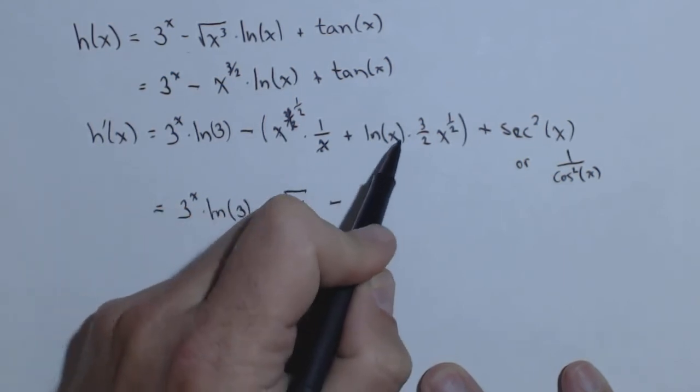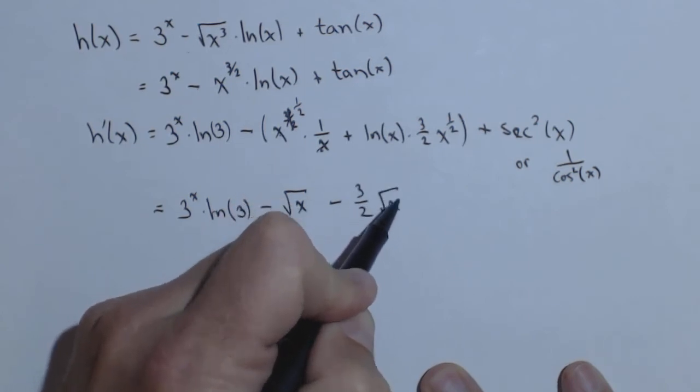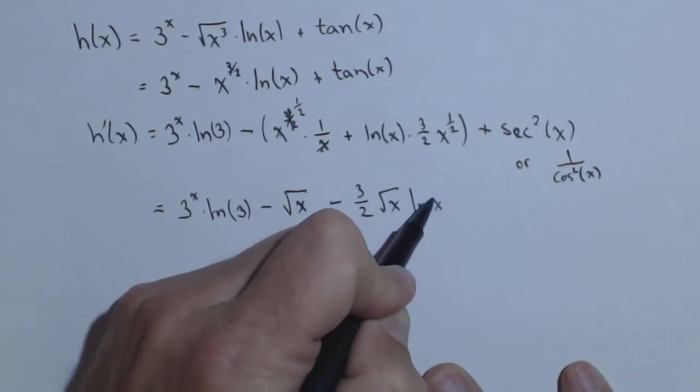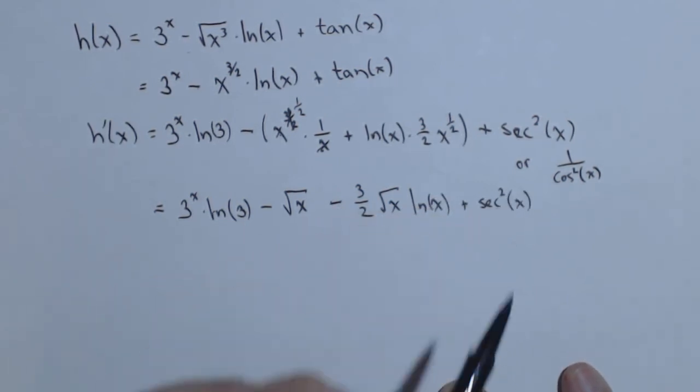Distributing that negative, I'll have (3/2) square root of x times ln(x) plus - again, I like using sec²(x), but 1/cos²(x) would be fine - and there's our derivative.